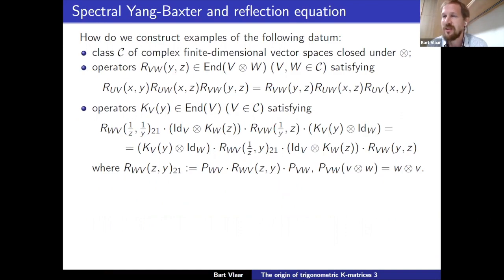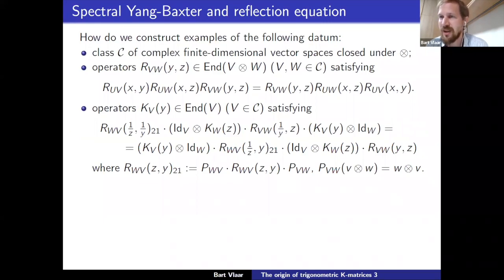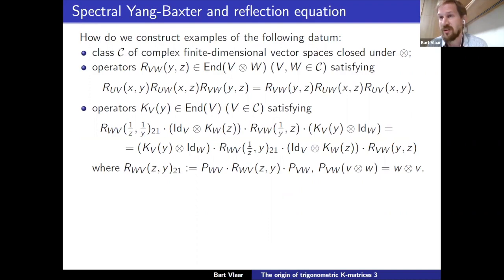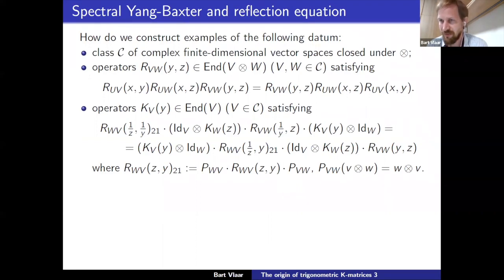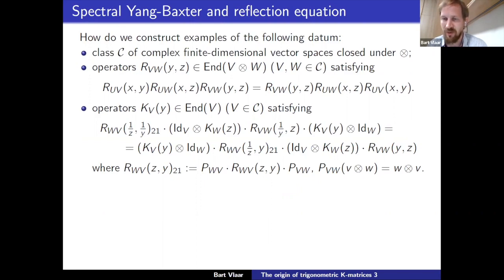To do nice things in integrability we want a class of complex finite-dimensional vector spaces closed under tensor products, and for each choice of vector spaces from our class, operators satisfying braid relations as specified here. This is a fairly general formalism where the R-matrix depends on two parameters; in practice for quantum affine algebras we look at R-matrices depending on quotients of the parameters. The most general picture also involves a generalization which requires the reflection equation, which we'll come to.